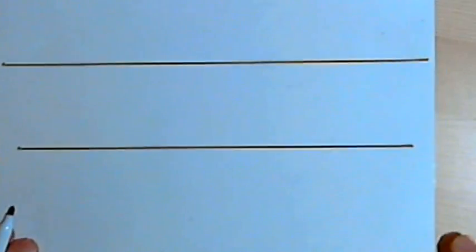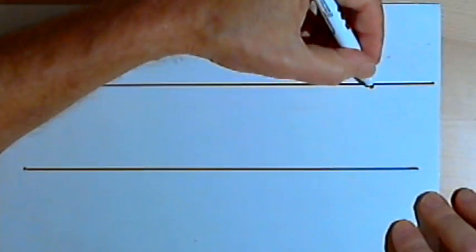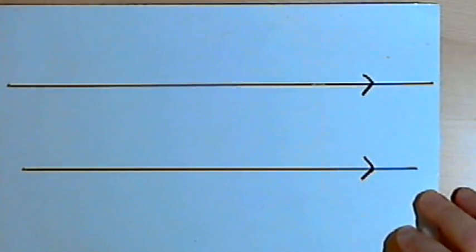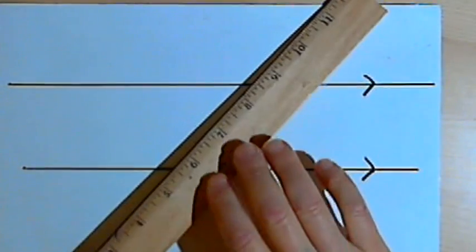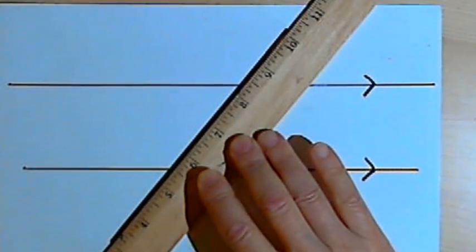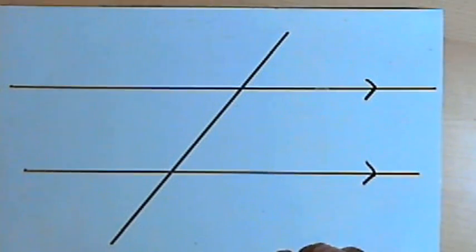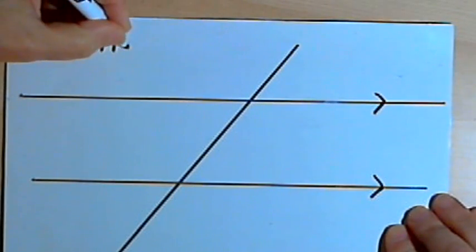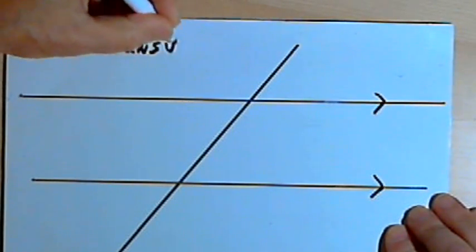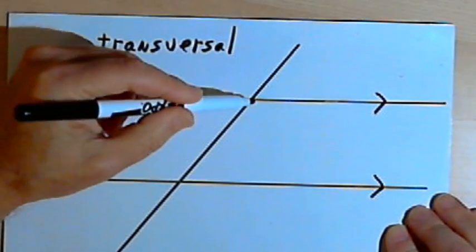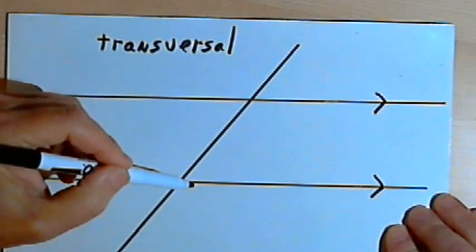Here's what this is about. I've got two lines that are parallel — I'll mark them as being parallel — and I'm going to draw a line through both of them. It doesn't matter what angle I put them at. This third line is called a transversal; it intersects both of the parallel lines.